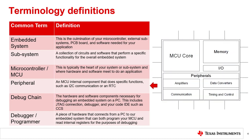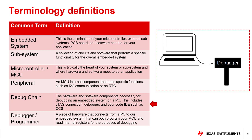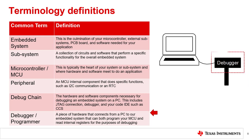A peripheral is an internal MCU component that does specific functions such as I2C communication or an RTC. A debug chain is the set of hardware and software components necessary for debugging an embedded system with a computer. This includes JTAG connections, debuggers, and your code development environment. A debugger or programmer is a piece of hardware that connects a PC to our embedded system that can both program and read internal registers of the MCU.